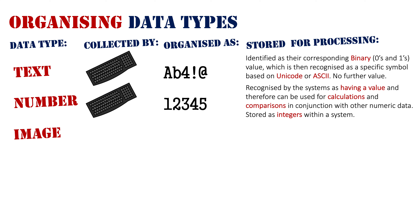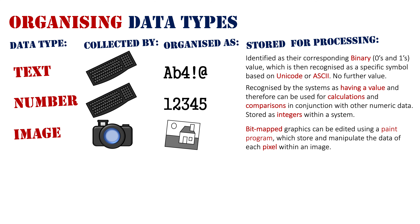Moving on to the next data type, we're going to look at image. An image can be taken by a camera, which captures an image from the real world. This picture will be stored in the system as a bit-mapped graphic which can be edited using a paint program. It will have information stored about it, allowing the user to manipulate each pixel within that image. Pixels are all the dots that make up the image, each in different colors representing the real world when the photo was taken. You can modify that image in later information processes — you can amplify it, add filters like on Instagram.